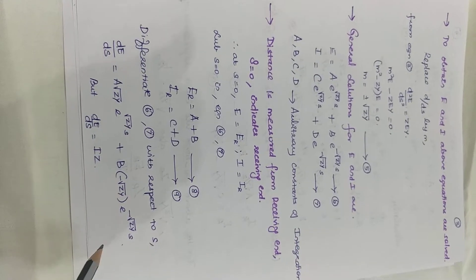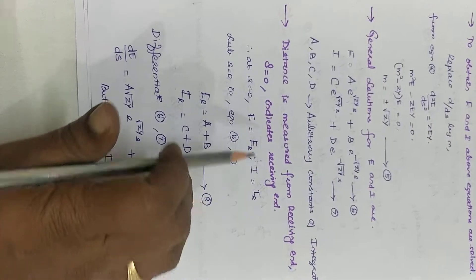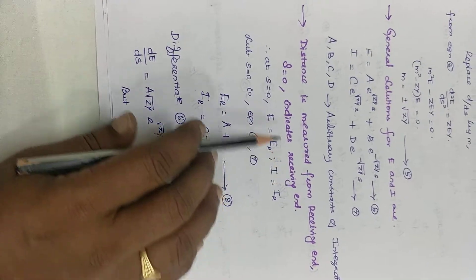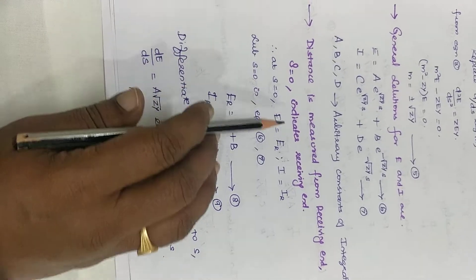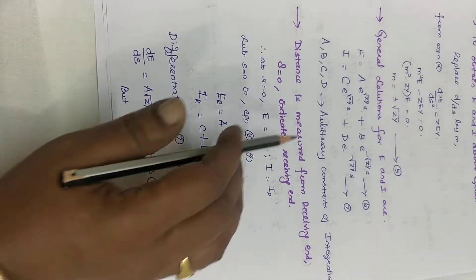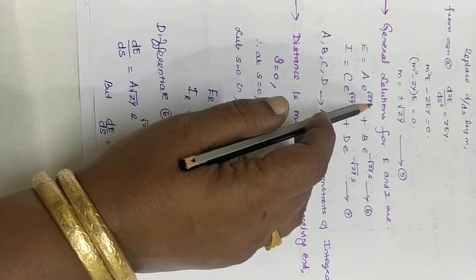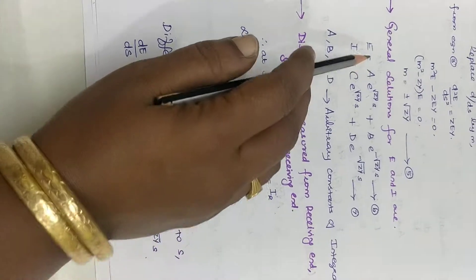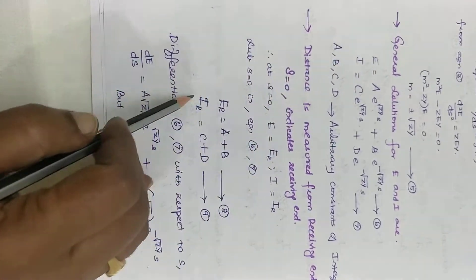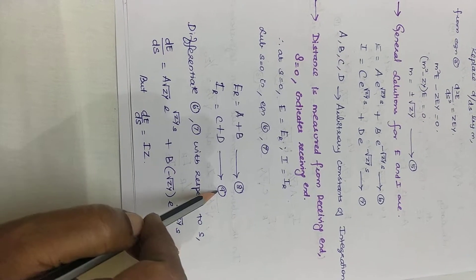This analysis is defined with S equal to 0 indicating the receiving end. At S equal to 0, E becomes equal to ER and I becomes equal to IR. Substituting S equal to 0, since e^0 equals 1, E becomes equal to ER equals A plus B, and I equals IR equals C plus D. These are named equations 8 and 9.